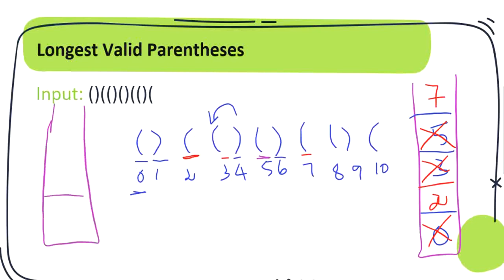At index 8, the character is an open bracket, so we push index 8. The next character at index 9 has a corresponding open bracket at index 8, so we pop that from our stack. Finally at index 10, which is an extra bracket, we push index 10. After iterating through all characters in the given string, we have three indexes left in our stack: 2, 7, and 10.